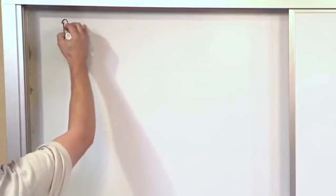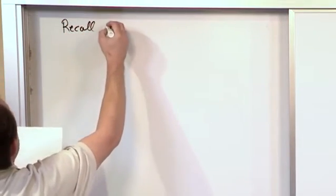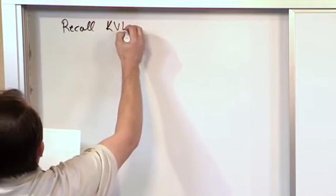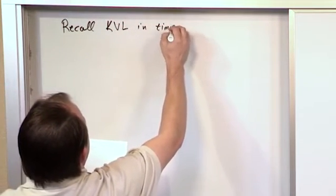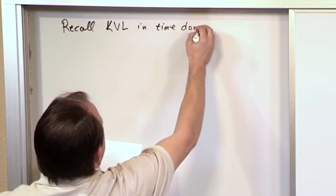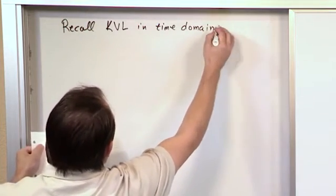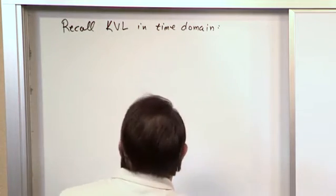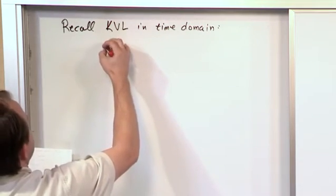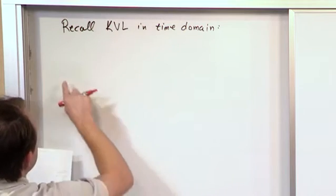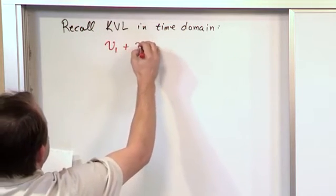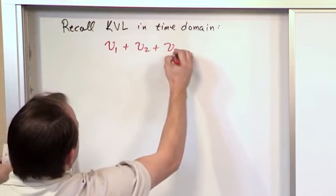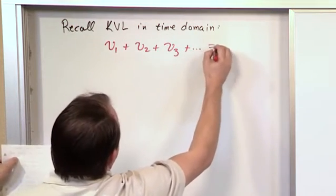And now I think I'll be able to explain to you why it's easier. So let's recall that the Kirchhoff voltage law in what we're calling the time domain — that just means what we've studied up to this point, not the phasor domain — is very simply the following: when you walk around a loop, it's just V1 plus V2 plus V3 plus dot dot dot, whatever you have, is equal to zero.